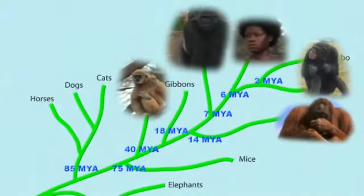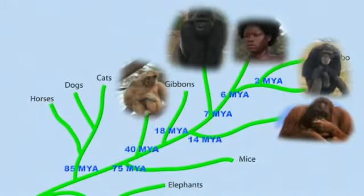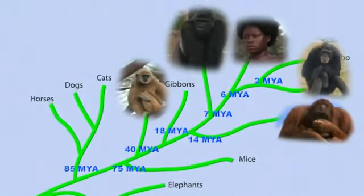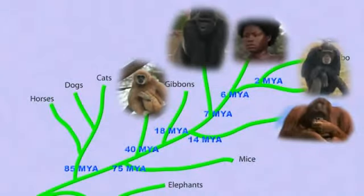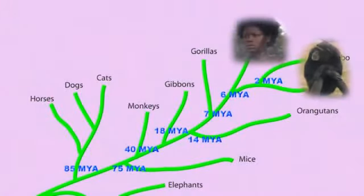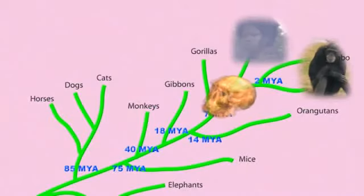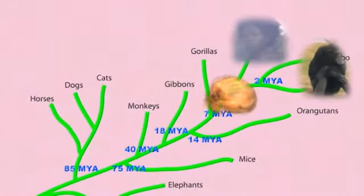A common misconception is that some modern species are descended from other modern species. This is rarely the case. Instead, closely related modern species evolved from a common ancestor — that is, neither one nor the other. Humans did not come from chimps. Both humans and chimps came from a creature that had more primitive features than either modern humans or modern chimps.